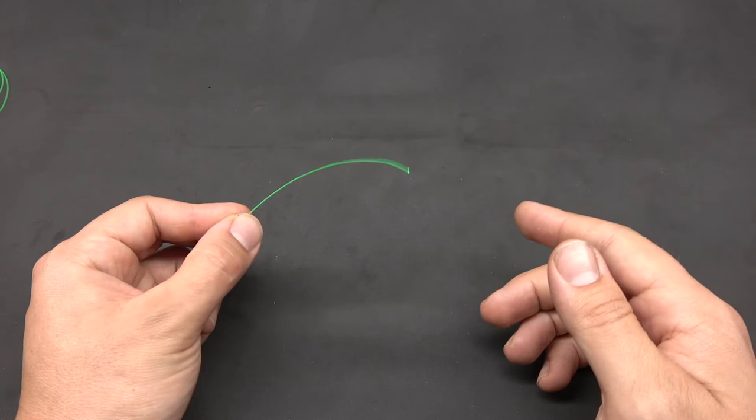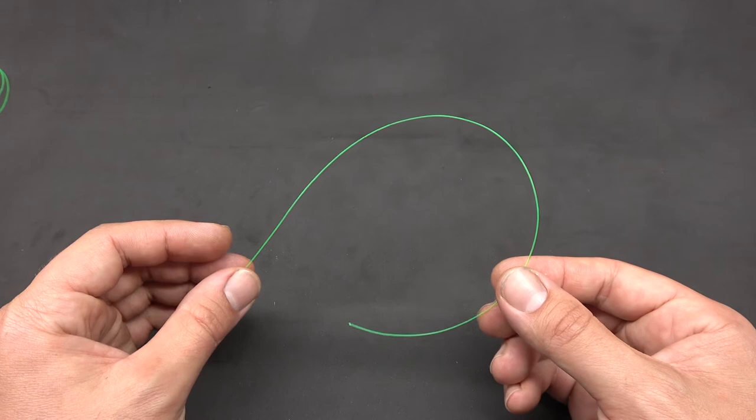First we're going to tie the dropper section of this rig. The dropper section holds your weight, and you can actually tie this with a lot lighter line. That way if your sinker gets snagged, you just break the line, and instead of losing your whole rig, you only lost the weight.